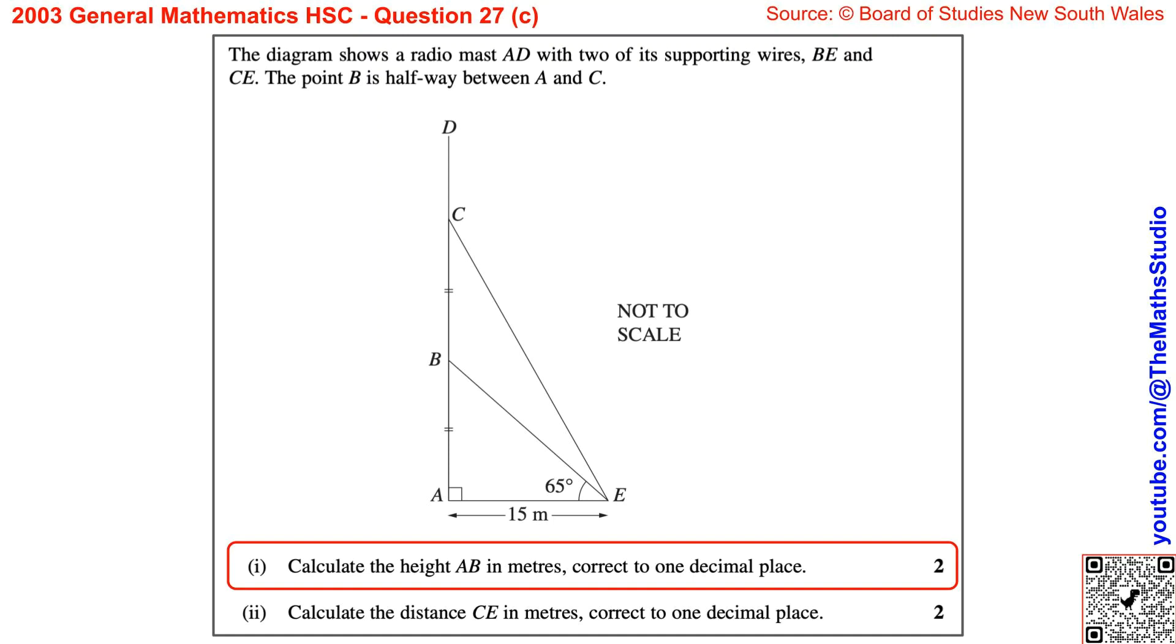Question 27, Part C. The diagram shows a radio mast AD with two of its supporting wires, BE and CE. The point B is halfway between A and C.